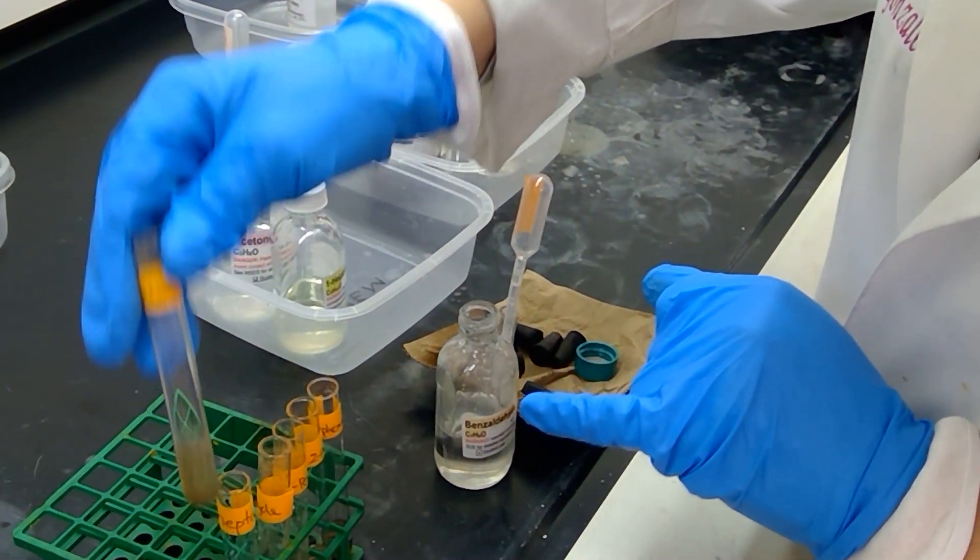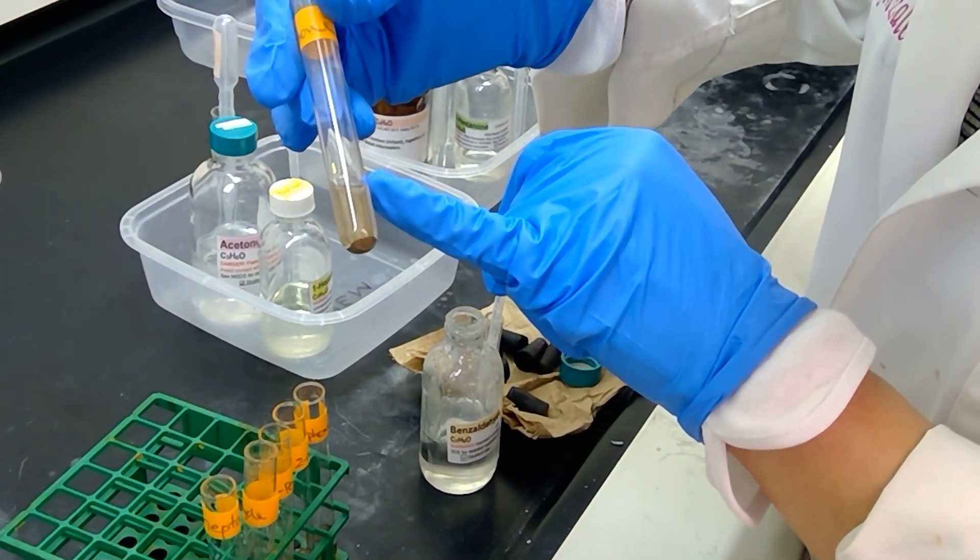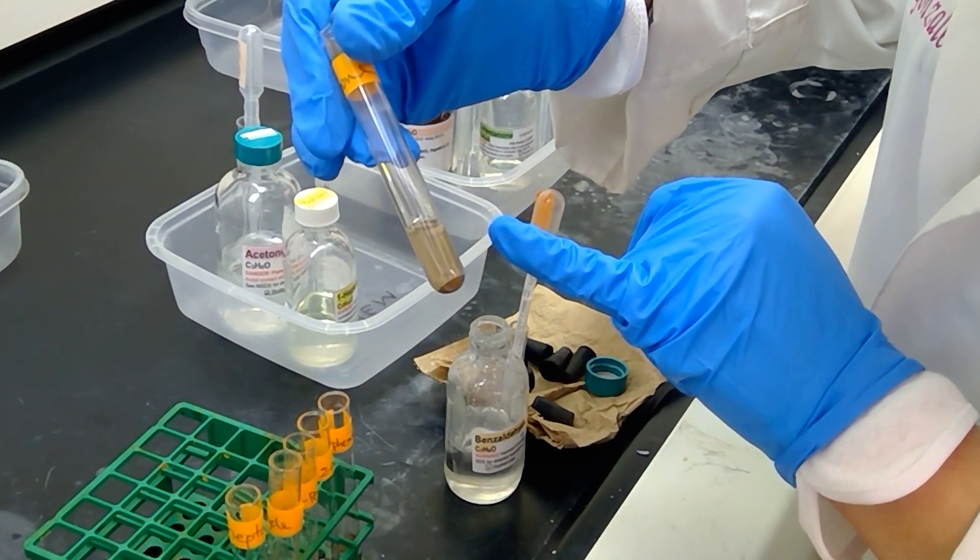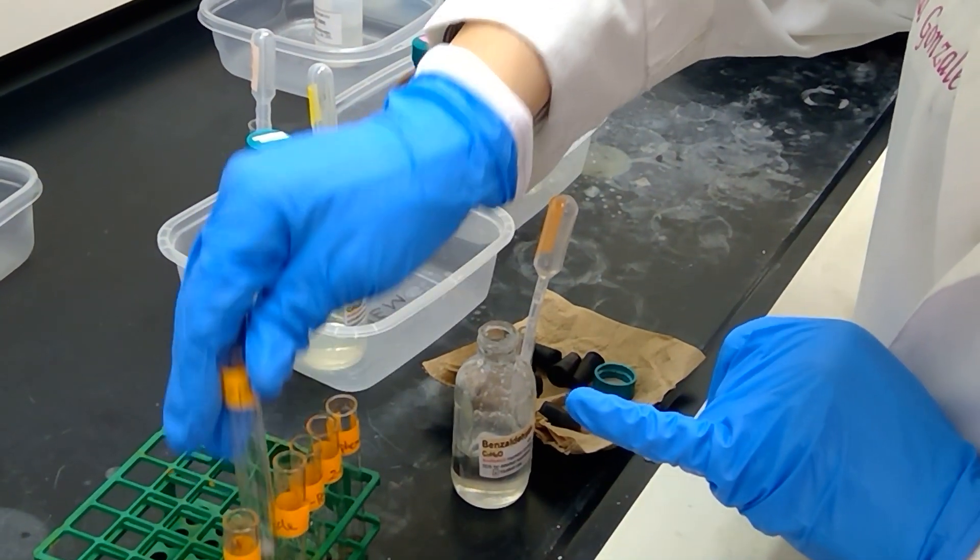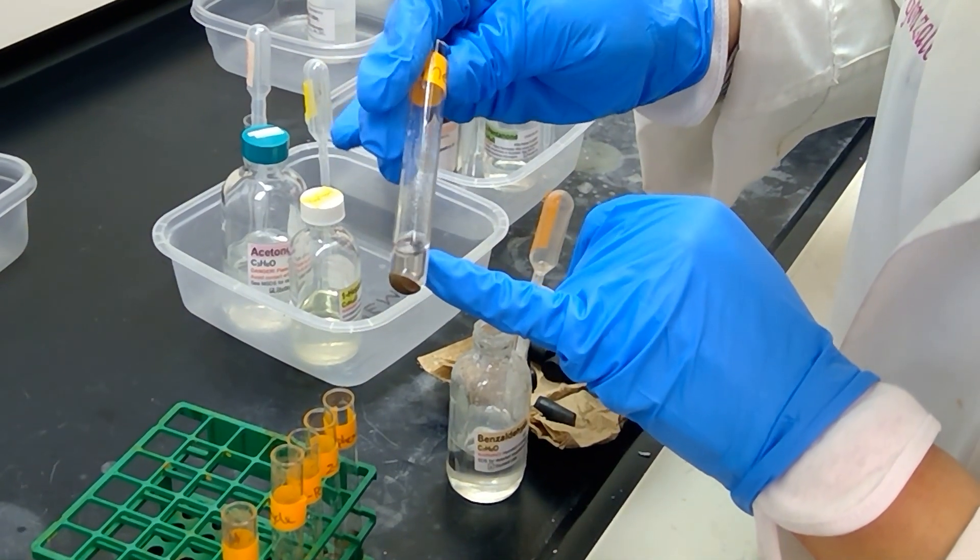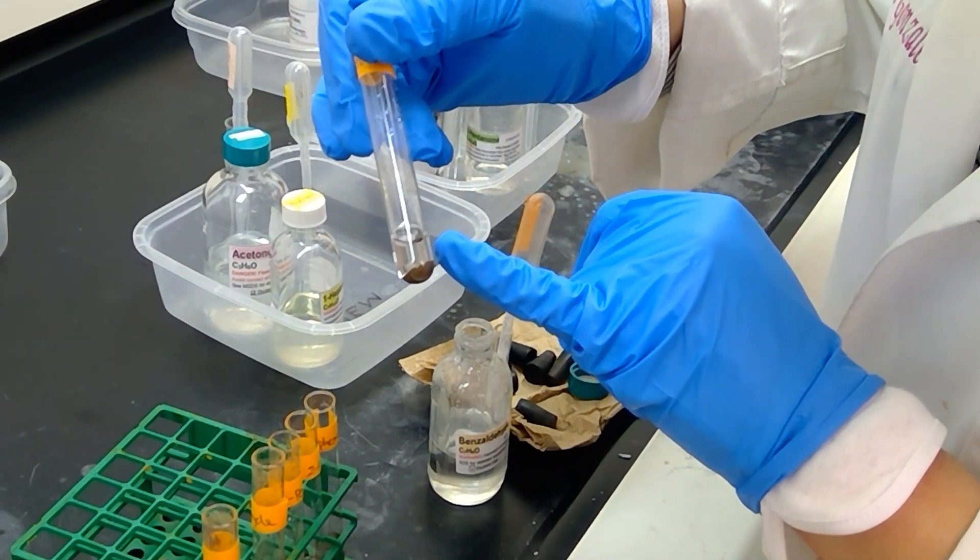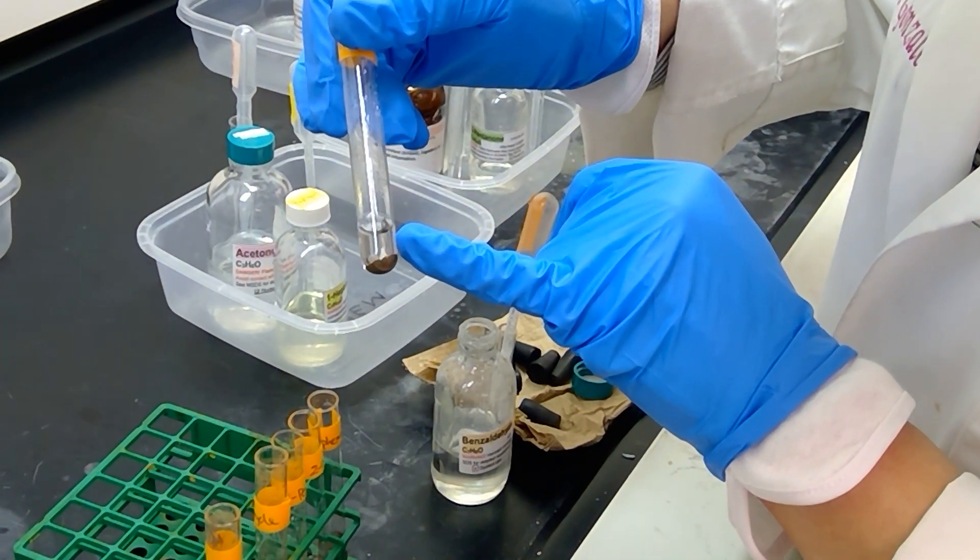Just to go back to our ketone, acetone, we definitely do not see any of that precipitation occurring in this test tube. Our heptanal is definitely much more precipitated, and on the sides of the test tube, you can see it does look somewhat silvery.